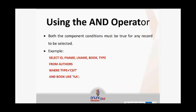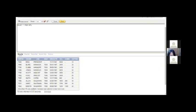Using the AND operator — this is the syntax, and this is a key topic for you. Both component conditions must be true for any record to be selected. The syntax is: SELECT column name FROM the table name WHERE column name comparison operator your first condition AND your second condition. For example, we can mix conditions — let's say we use a comparison of a record. So: SELECT asterisk FROM emp WHERE job is equals to manager.